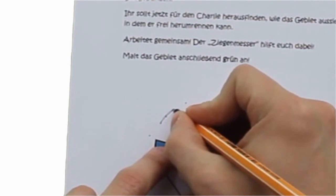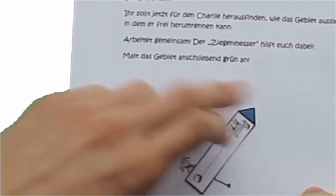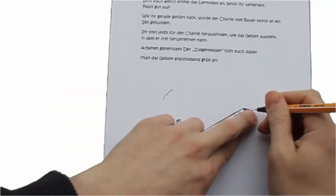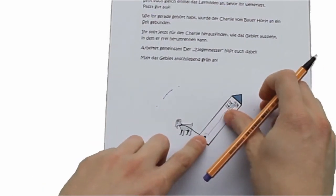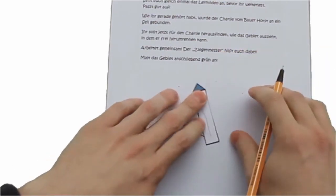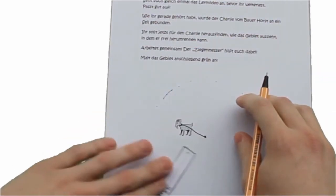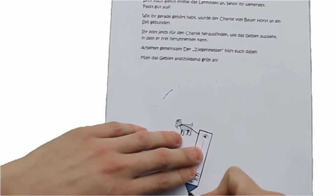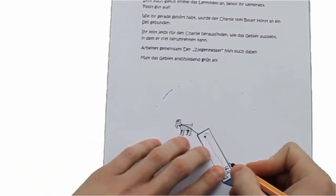Und das macht ihr natürlich noch öfter. Also nicht nur auf dieser Seite, sondern das könnt ihr auch noch weiter drüben oder unten. Also das macht ihr jetzt ganz oft so lang, bis ihr eine Begrenzungslinie ziehen könnt. Und diese Fläche, die dann entsteht, also diese Fläche, auf die der Charlie frei herumrennen kann, die solltet ihr am Grün anmalen. Ich wünsche euch viel Spaß dabei.